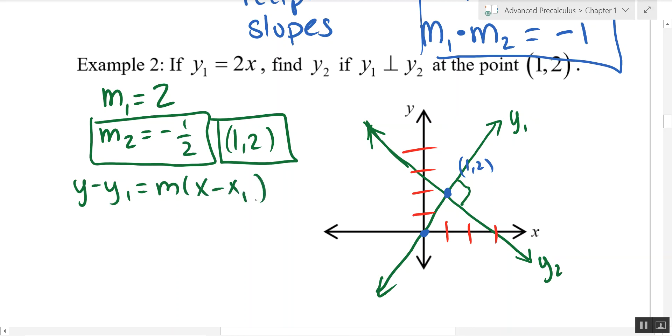I'm just going to plug in what I know. I get y minus 2 equals negative 1 half times x minus 1. Leave it like that. Don't multiply it out. They did not ask you to solve for y.